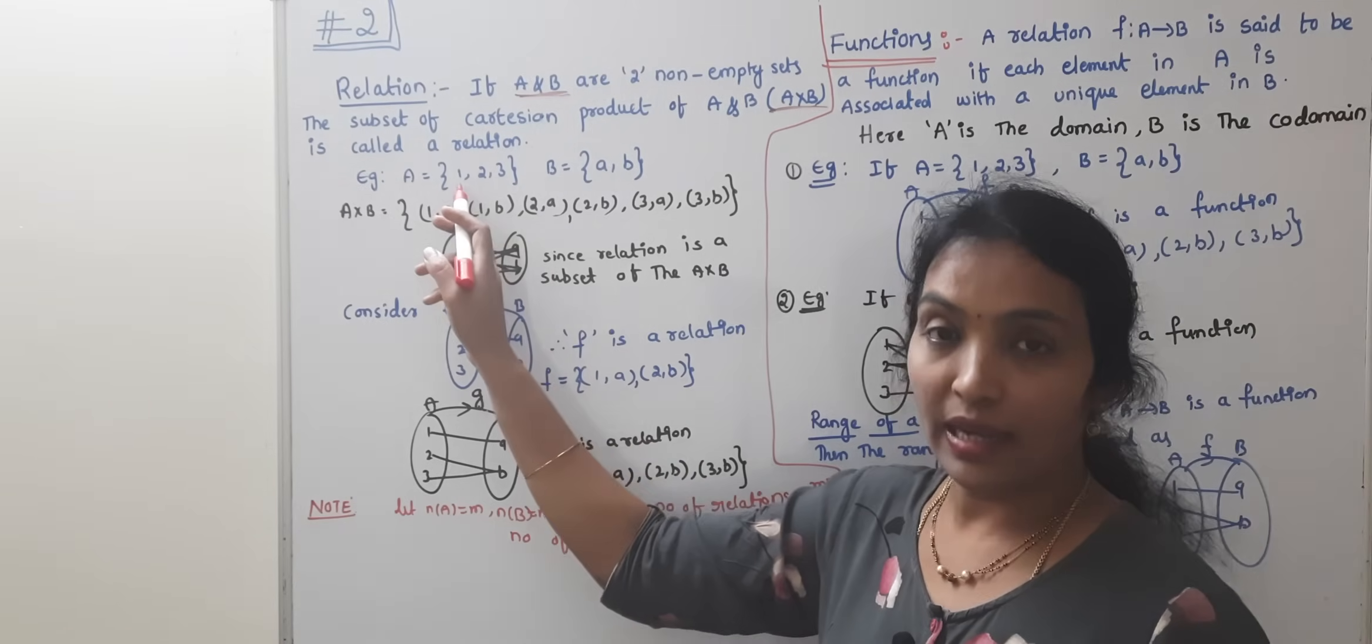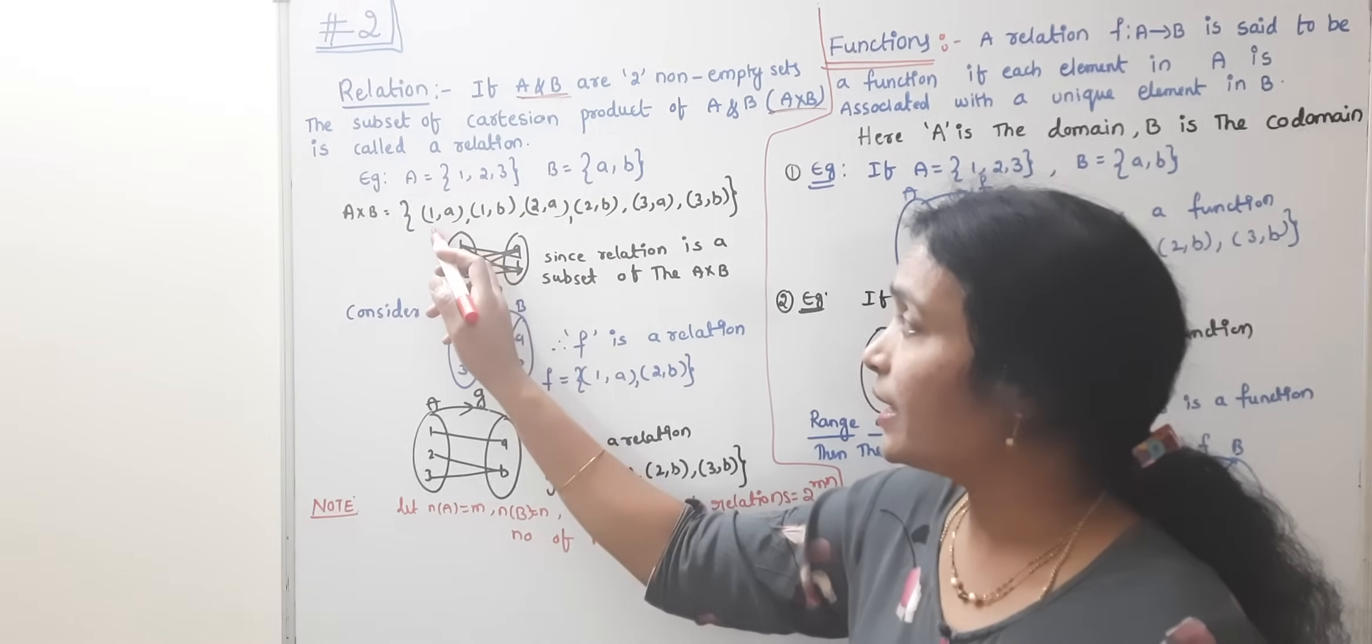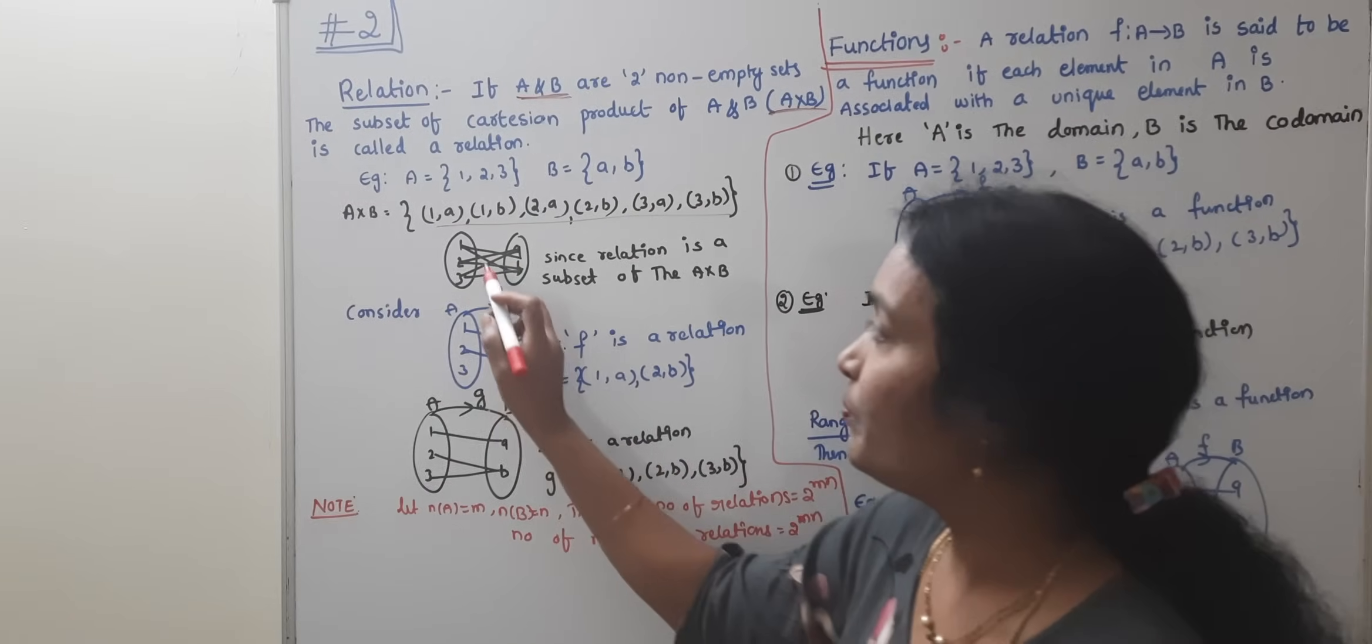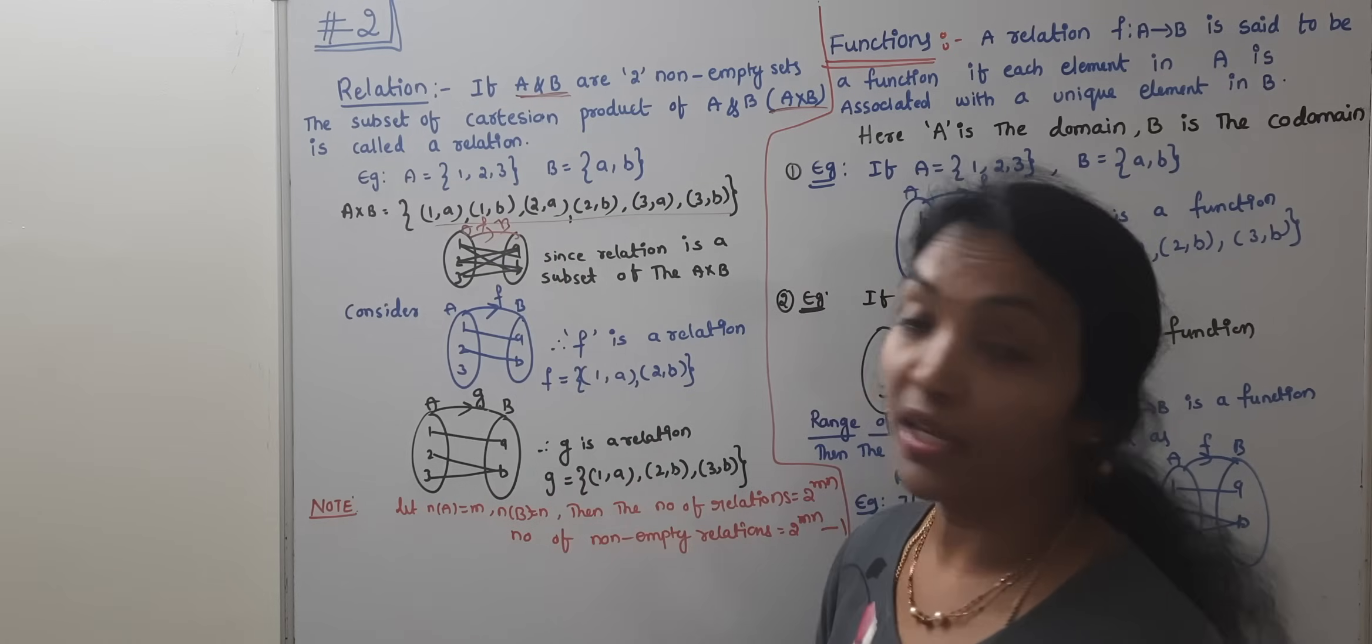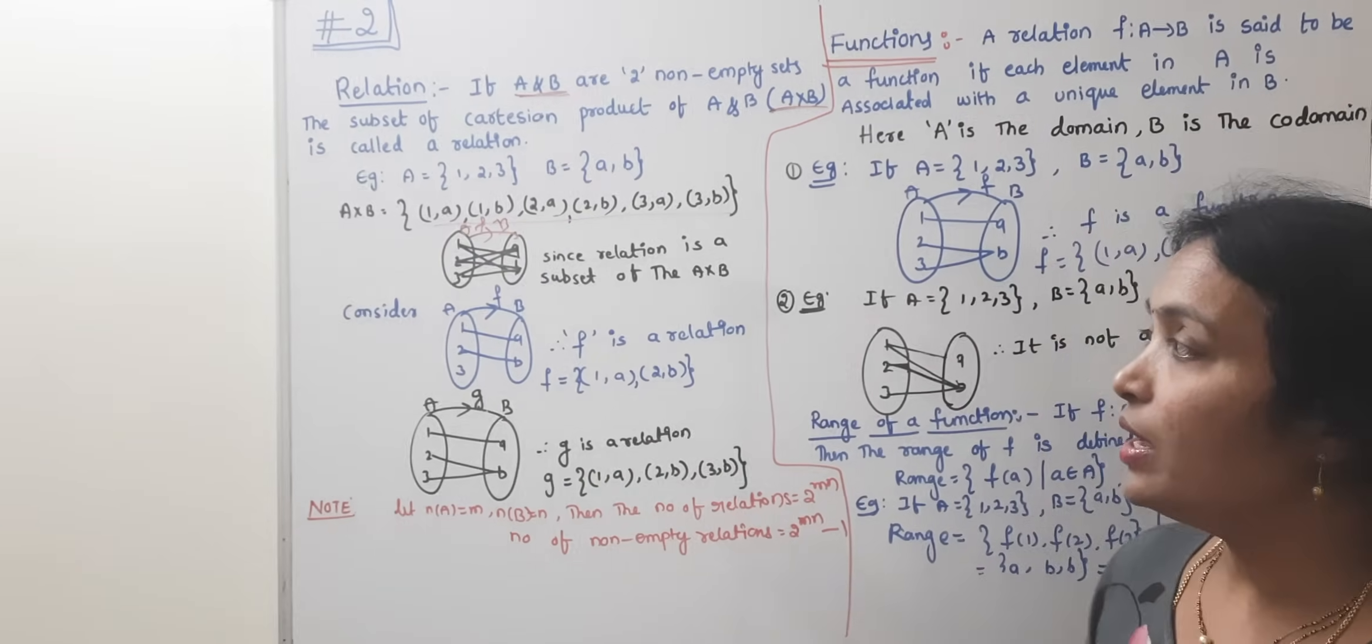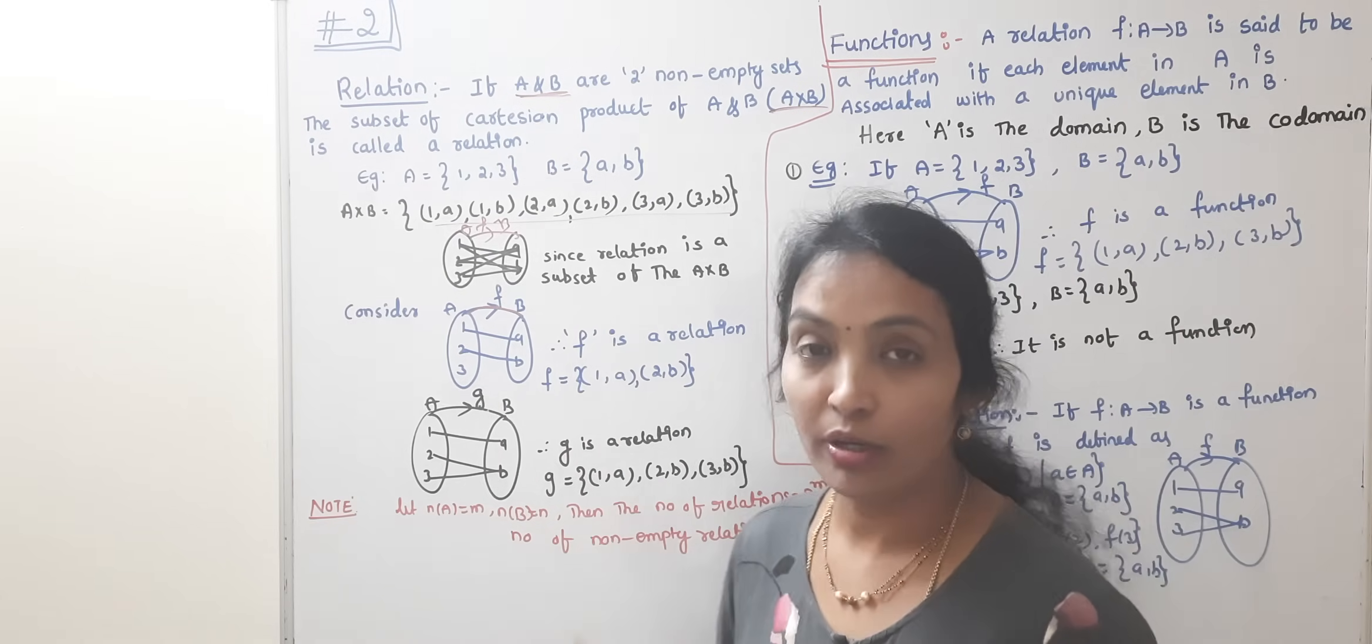If you consider A equals 1, 2, 3 and B is A, B, then A cross B gives us 1A, 1B, and so on. It is a relation. This Cartesian product can be represented in diagram form. This is the relation between A and B.